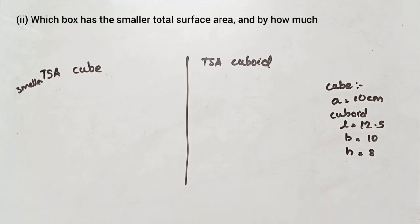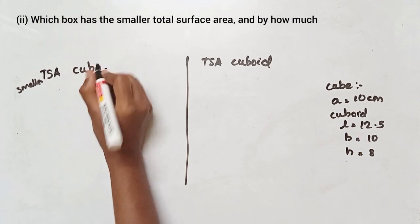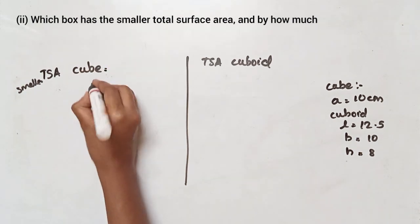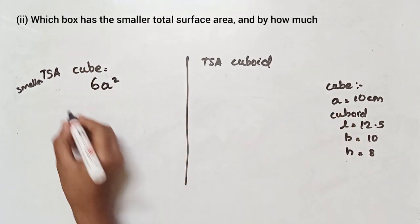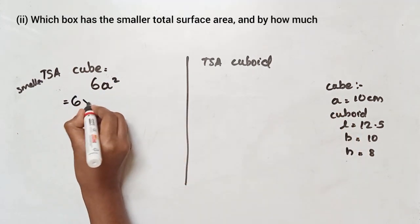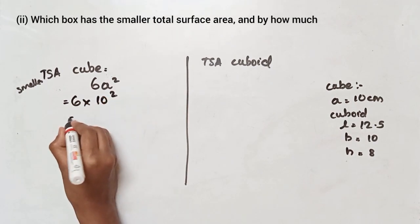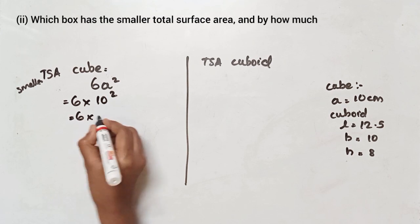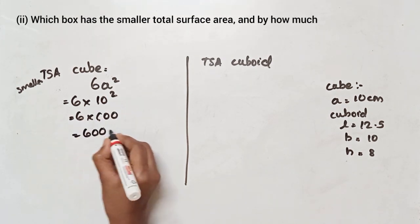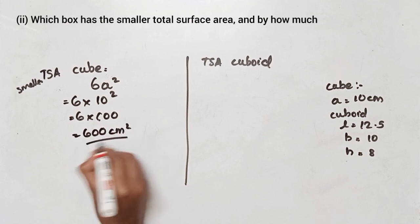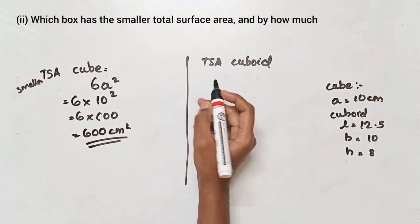Let us find the total surface area of the cube. The formula is 6a squared. So 6a squared equals 6 into 10 squared, which is 6 into 100, equal to 600 cm squared.